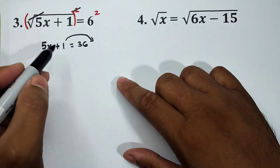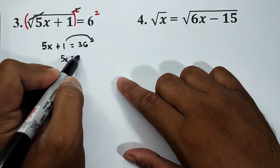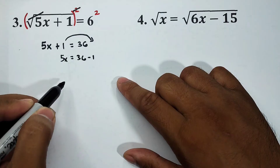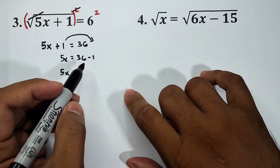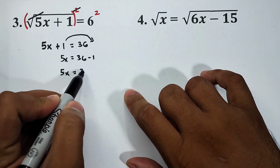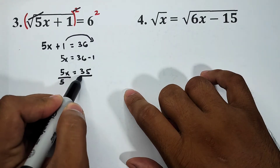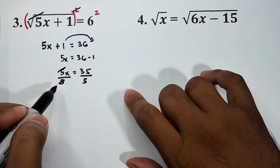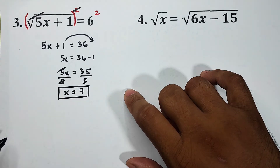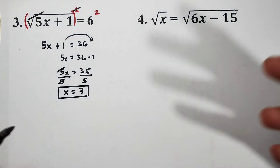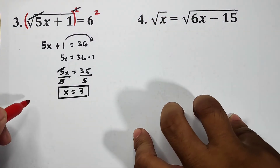We manipulate the equation and transpose the one to the other side — from positive it becomes negative. Our new equation is 5x is equal to 36 minus one, which gives us 5x is equal to 35. To finally solve for x, we divide both sides by five, and x is equal to 7. This is the answer for number three. If your teacher demands a checking, let me show you how.